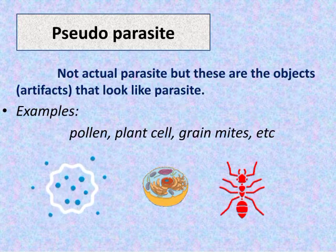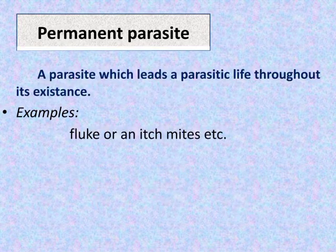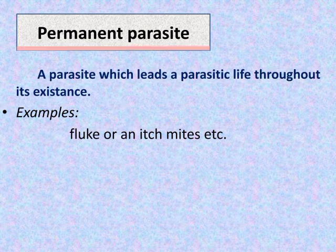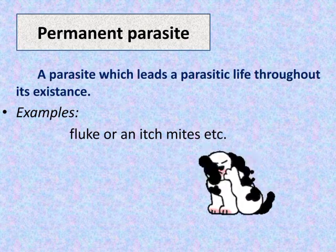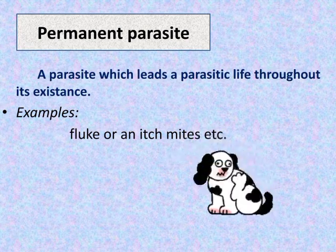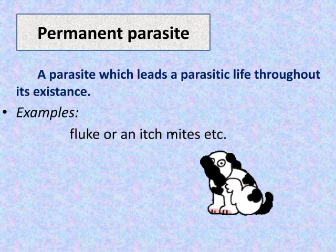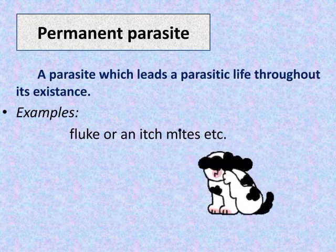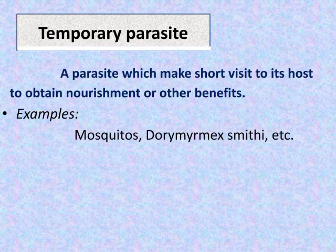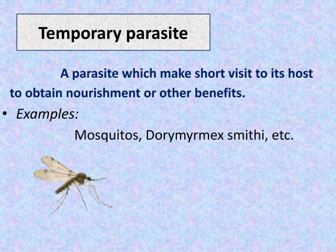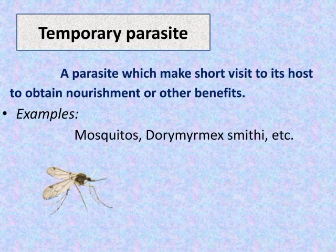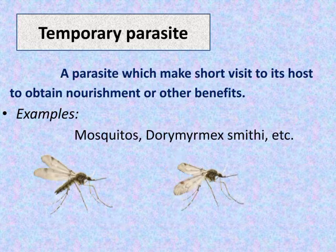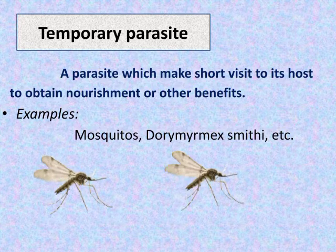Permanent parasites lead a parasitic life throughout their existence. Examples include flukes and their mites. Temporary parasites make a short visit to their host to obtain nourishment or other biological benefits — for example, mosquitoes.